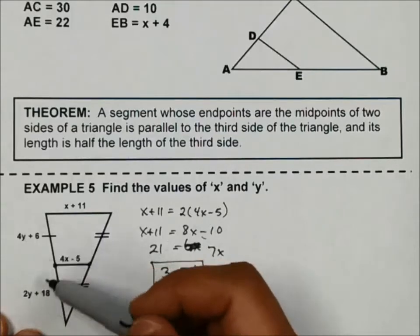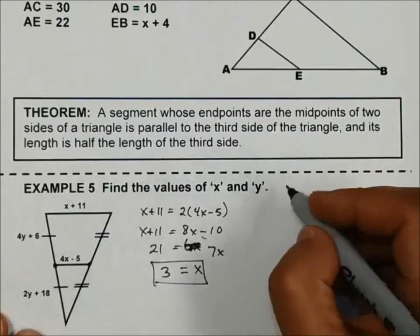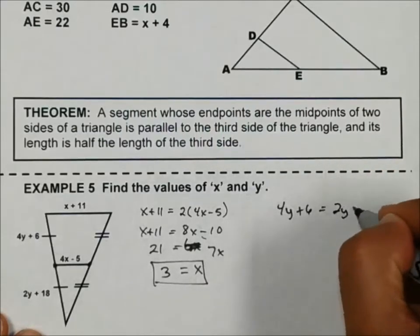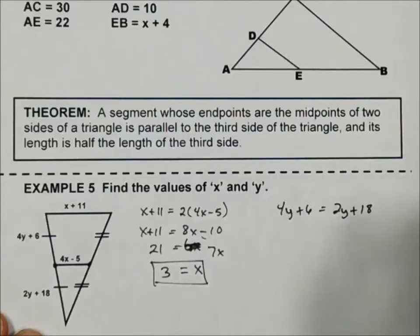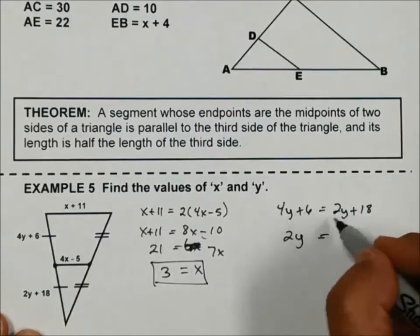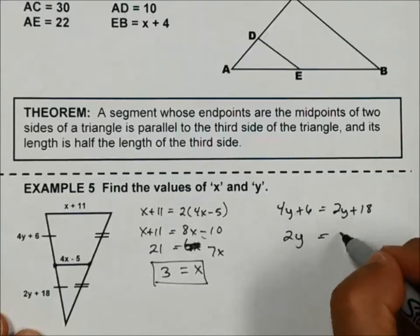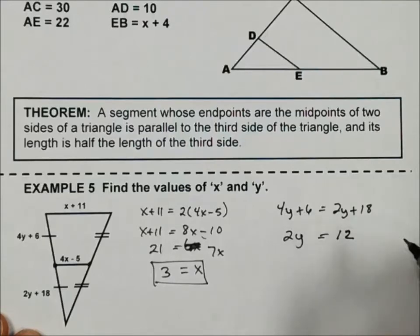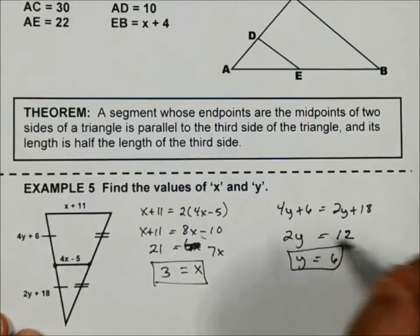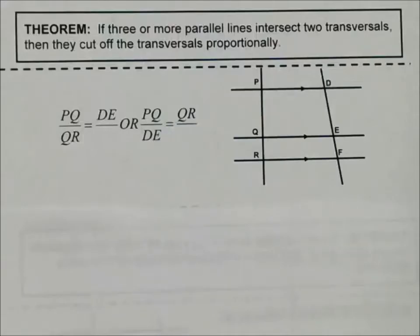For the Y values, these tick marks tell me that my equation is going to need to be 4Y plus 6 equals 2Y plus 18. This gives me 2Y on this side. I would subtract 6 to get 12, and then divide by 2 gives me Y is 6.